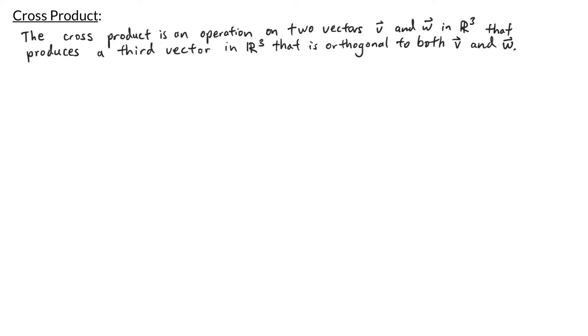In this video we'll be talking about the cross product. The cross product is an operation on two vectors v and w in R3 that produces a third vector in R3 that is orthogonal to both v and w.